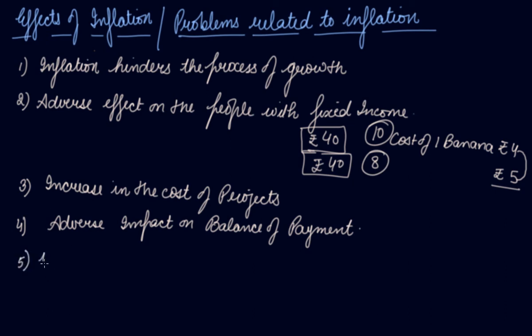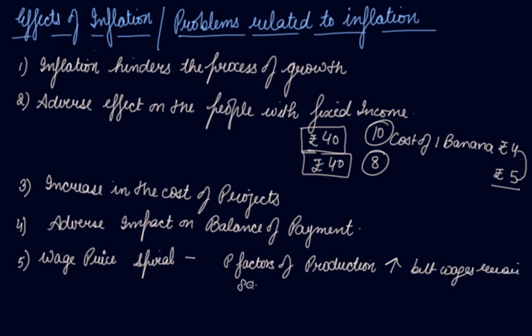Fifth, wage-price spiral. The price of factors of production increases, but wages remain same. Ultimately, your real income reduces, or you can say your purchasing power reduces. This is another problem of inflation.